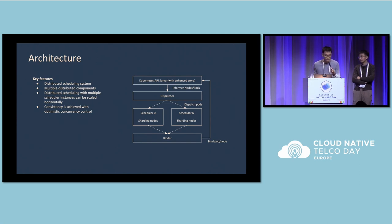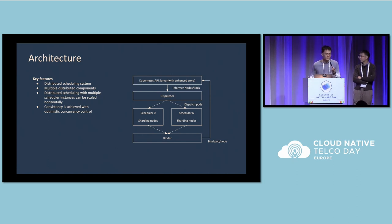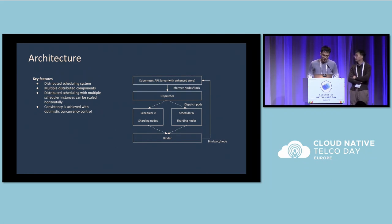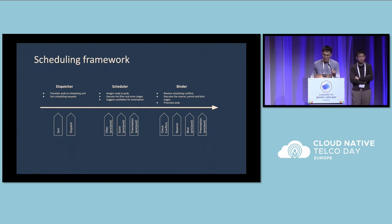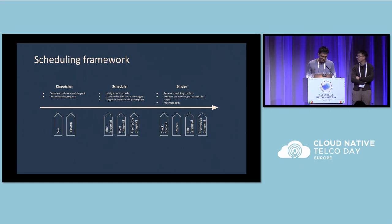This design allows us to scale the number of scheduler instances horizontally to achieve higher throughputs. However, having multiple scheduler instances running at the same time will lead to conflicts. For example, two scheduler instances without shared state might choose to assign the last CPU on a node to two different pods. This is where the binder comes in — the binder is in charge of conflict resolution before actually writing results back to the API server. The scheduling actually starts at the dispatcher, which watches pods on the API server and groups them into groups called scheduling units.